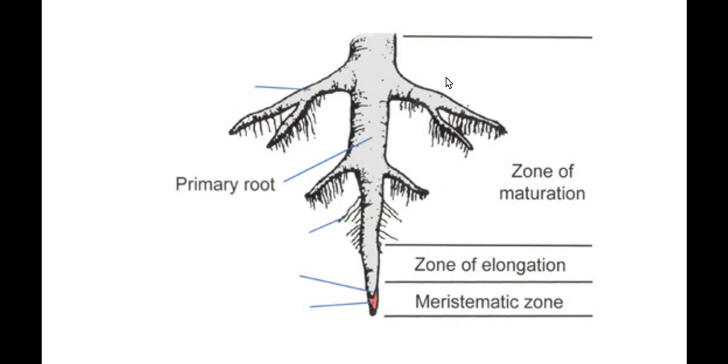We can see here we have the primary root, which is the main root that comes from the body of the plant. We then have lateral roots that come off that, which are found along with the root hairs in the zone of maturation. This is the area of the plant where it's established and maturing, whereas the zone of elongation is where the roots continue to grow into the soil. The meristematic zone is where we have our root tip, which is protected by our root cap at the very end.